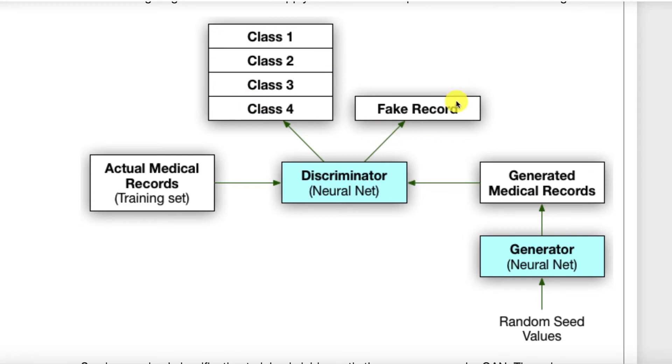Once we're done training the whole thing, we now have this discriminator that can tell the difference between fake and what the classes are. We also have the generator that is able to generate these fake medical records. But we can then throw away the generator, and we'll use the discriminator really, truly as our actual neural network.